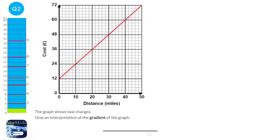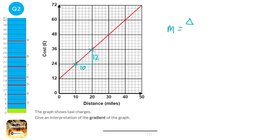We've got to first find out what the gradient is for our graph. We'll pick two points and draw a triangle between them. It's gone across 10 and from 24 to 36, so it's gone 12 up. To work out the gradient — which you can call m or just write out the word gradient — it's change in y over change in x. Y has changed by 12 and x has changed by 10, so it's 12 divided by 10, which is 1.2.